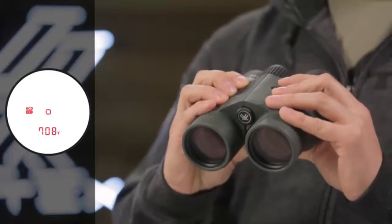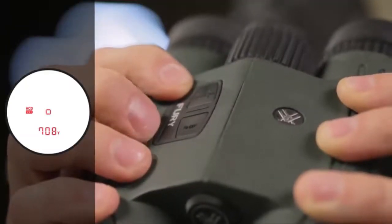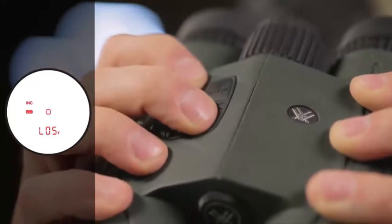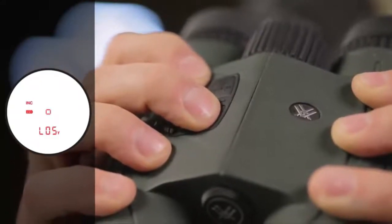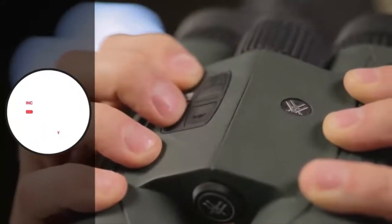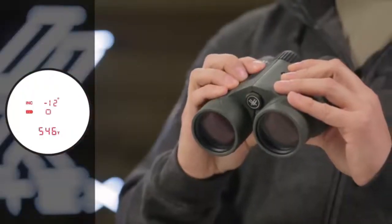A scan feature gives continuous range readings to pan across a landscape or track a moving target. Three brightness settings keep the display visible in various lighting conditions while a battery life indicator is always visible in the display.